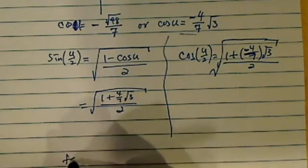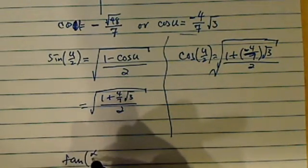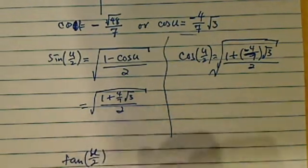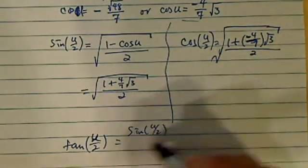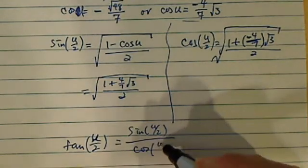the next thing we need to do is find tangent of u over 2. This equals sine u over 2 divided by cosine u over 2.